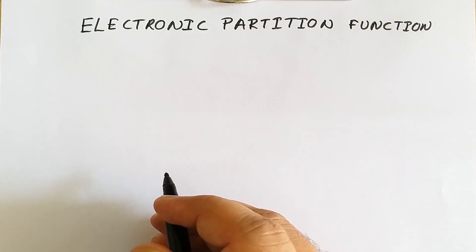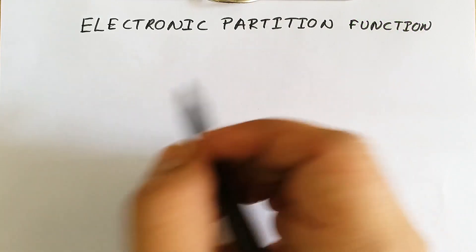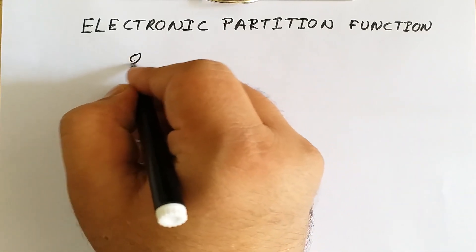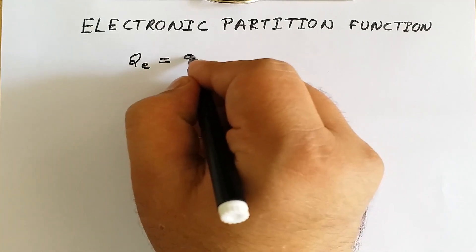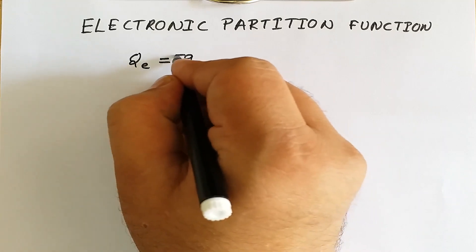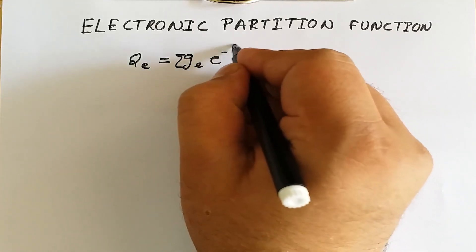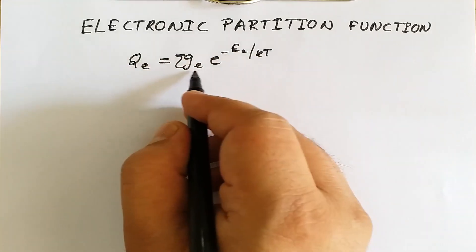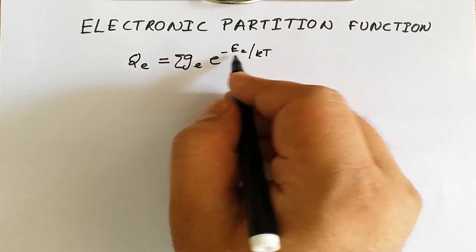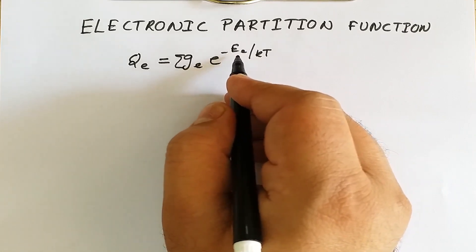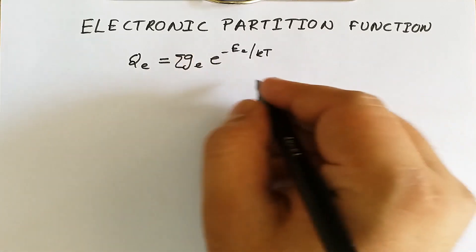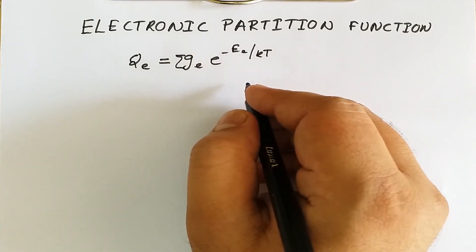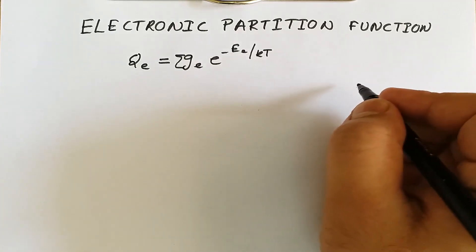Welcome. Today we are going to discuss the electronic partition function. In general, for the electronic partition function we can write qe — where e represents the electronic partition function — equal to the summation of ge times e raised to minus ee upon kT, where ge is the degeneracy and ee is the electronic energy.